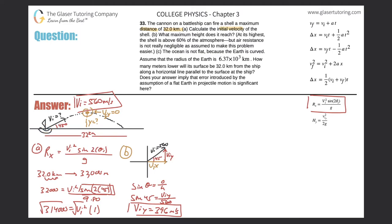Using kinematic equation: final velocity squared in y equals initial velocity in y squared plus two times acceleration times displacement y. We know the initial y-velocity (396), the final y-velocity (0), and the acceleration in the y-direction is gravity: negative 9.80 m/s².